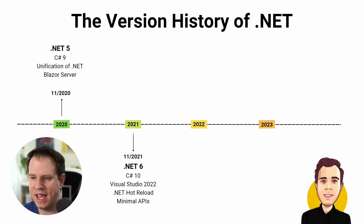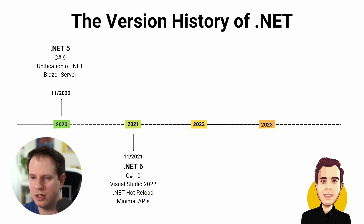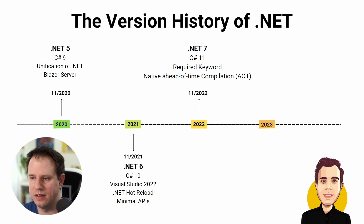.NET 6.0 was released on November 8th, 2021, as the first long-term support release after the renaming to .NET. It came with C# 10, and on the same day Visual Studio 2022 was released. It includes support for Hot Reload — one of the technologies that massively speeds up the development cycle — as well as Minimal APIs for ASP.NET Core development, top-level statements, and file-scoped namespaces. .NET 7 was released on November 8th, 2022, as a short-term support release with C# 11, introducing the required keyword and native Ahead-of-Time (AOT) compilation for standalone executables.